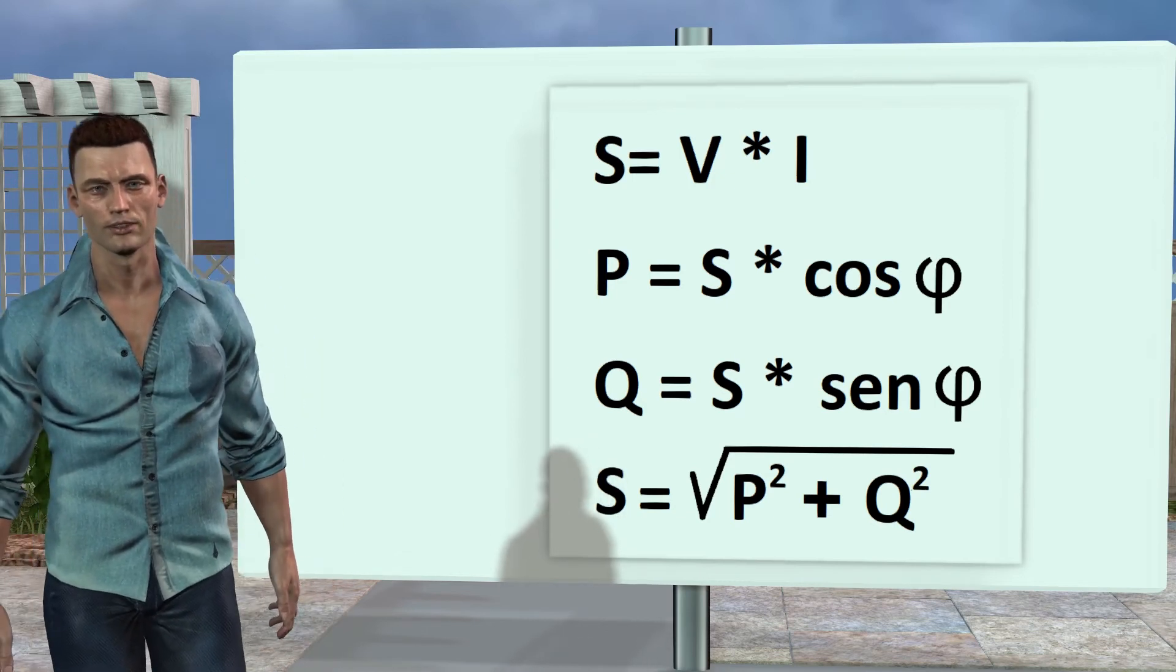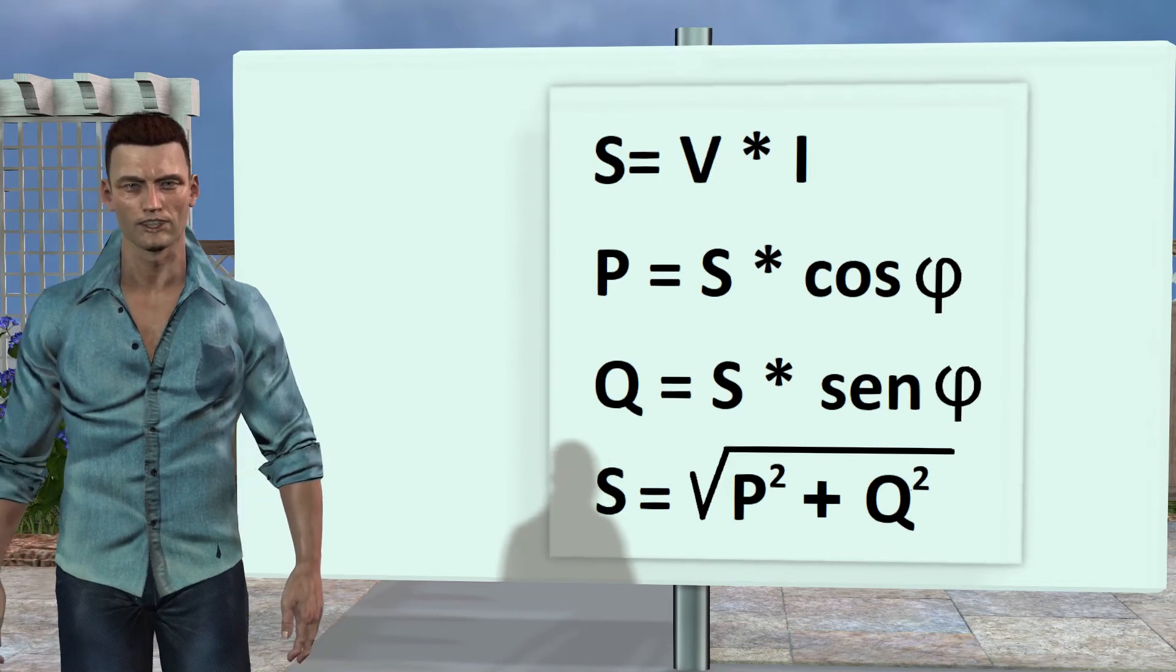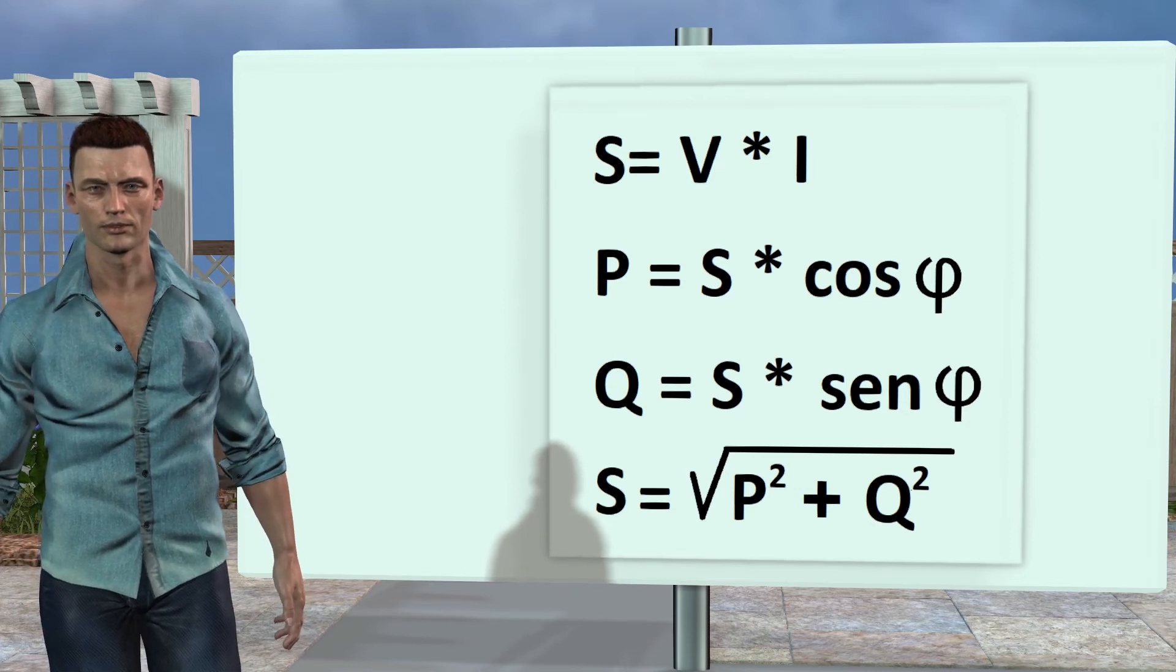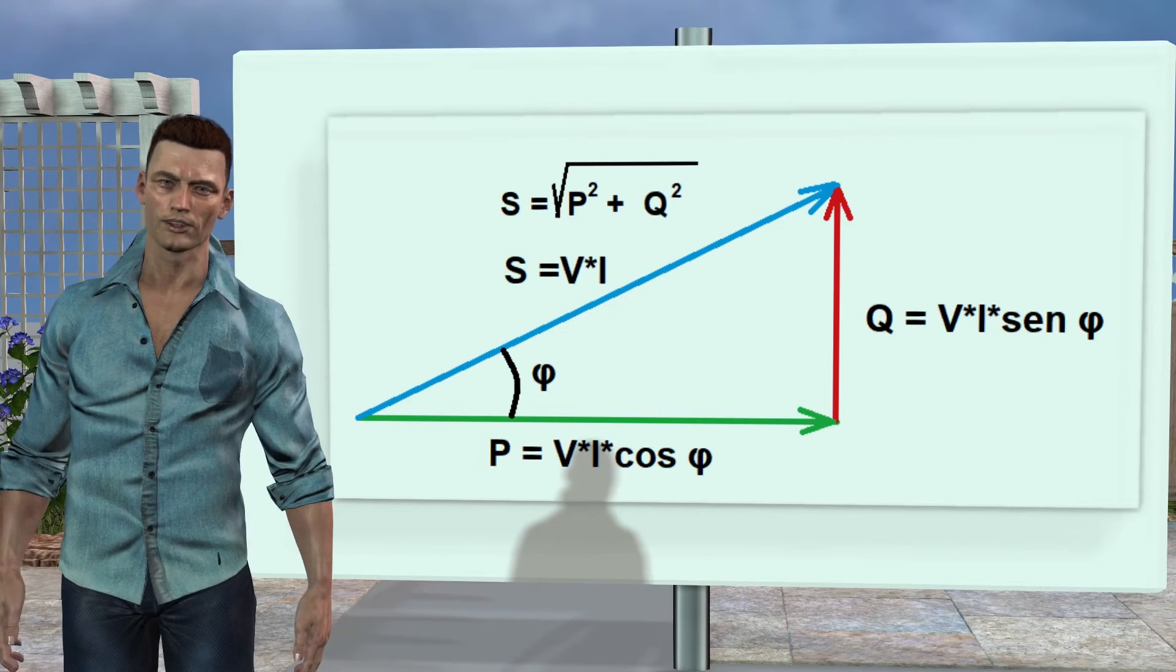The RMS value of the apparent power is then obtained through the square root of the sum of the RMS values of the active and reactive power both squared, as indicated in the following formula. Expression representing the Pythagorean theorem for the well-known triangle of powers.